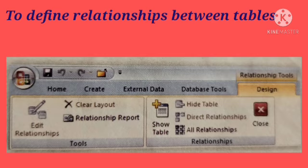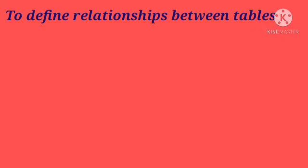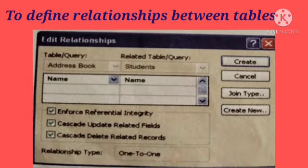Third, the Edit Relationships dialog box is displayed. Check the names displayed in the two columns to ensure they are correct. Fourth, click on the check box beside the Enforce Referential Integrity option. A check box means a tick mark.